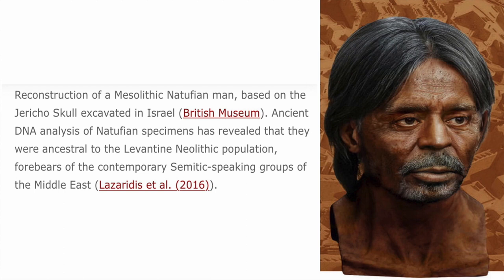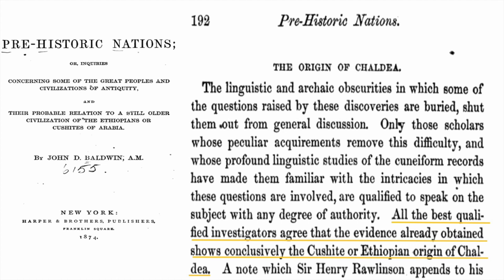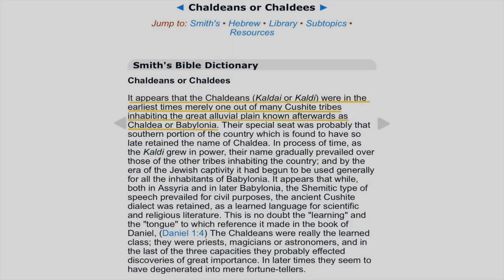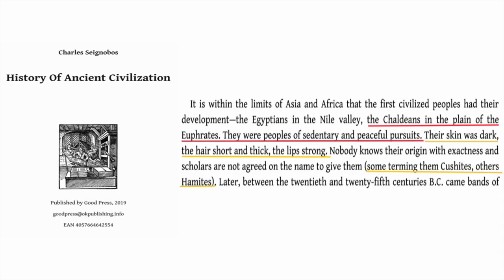This is a reconstruction of a Mesolithic Natufian man based on the Jericho skull excavated in Israel. Ancient DNA analysis of Natufian samples has revealed they were ancestral to the Levantine Neolithic population — forebearers of contemporary Semitic-speaking groups of the Middle East. According to the book Prehistoric Nations, all the best qualified investigators agree that the evidence conclusively shows the Kushite or Ethiopian origin of Chaldea.